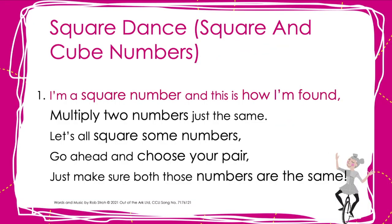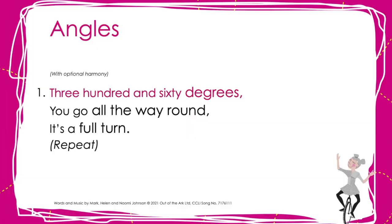I'm a square number, and this is how I'm found. Multiply two numbers just the same.